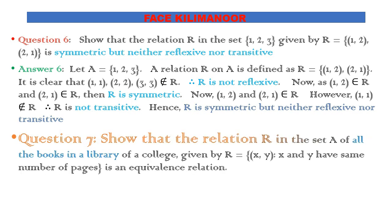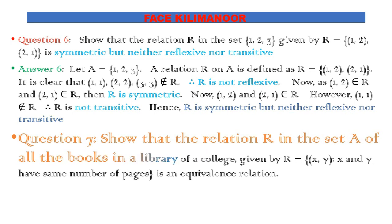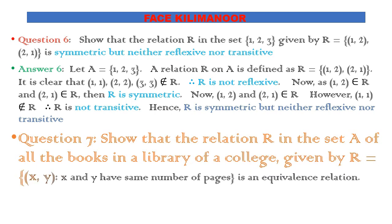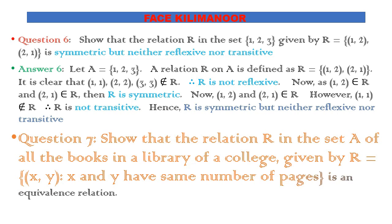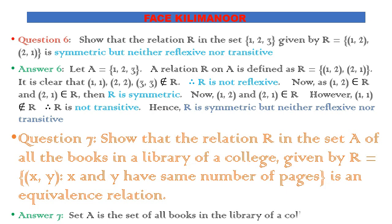Question 7: Show that the relation R in the set A of all books in a library given by R = {(X,Y) : X and Y have the same number of pages} is an equivalence relation. Clearly X is related to X since every book has the same number of pages as itself, so R is reflexive. If X and Y have the same pages, then Y and X have the same pages, so R is symmetric. Similarly, R is transitive.